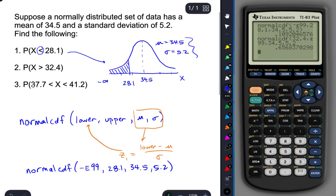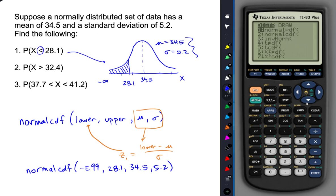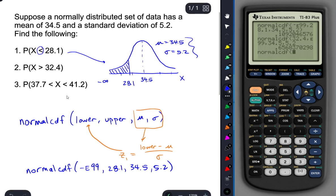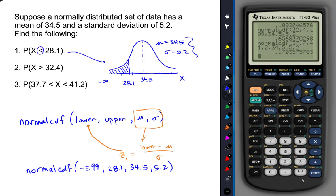And lastly, if we have a between probability, nothing different happens here. We just simply use these two values for the lower and upper bounds of our shaded region. We don't need to worry about substituting in anything for infinity. So, last two inputs would still be mean and standard deviation. Once we have that all in, just let the calculator come up with the probability for us.